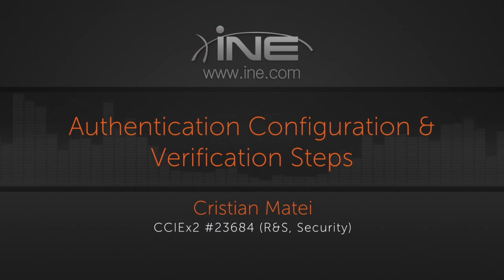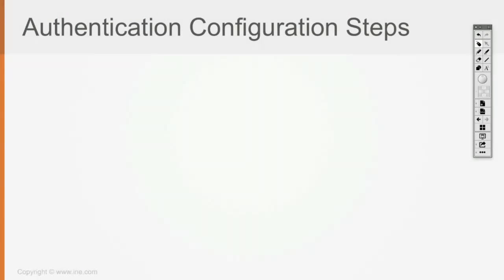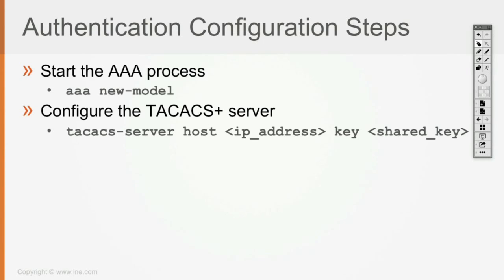Let's speak about the negation navigation steps before we go to the use case. The first step in AAA is that you cannot configure any AAA commands before you enable the AAA process on IOS. That's going to be done via the 'aaa new-model' command.